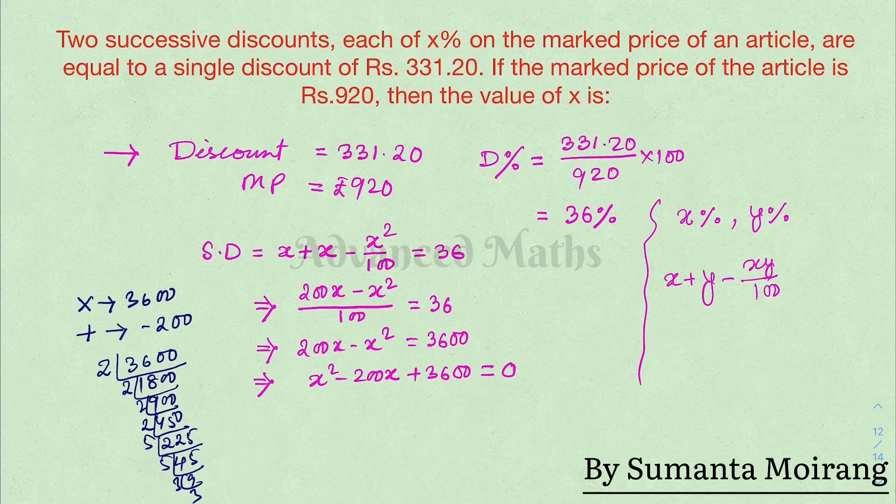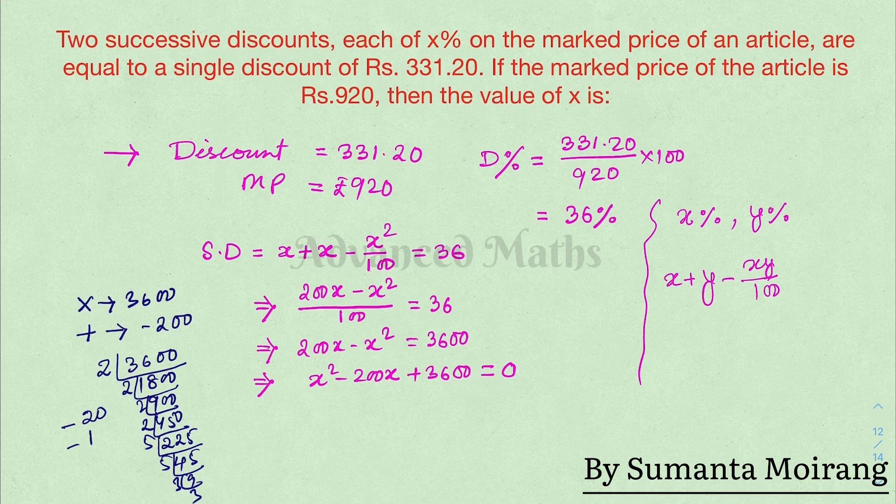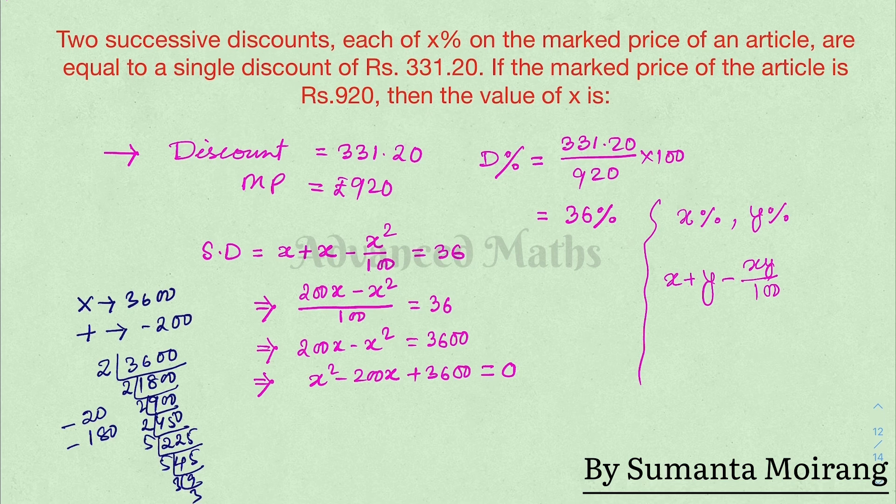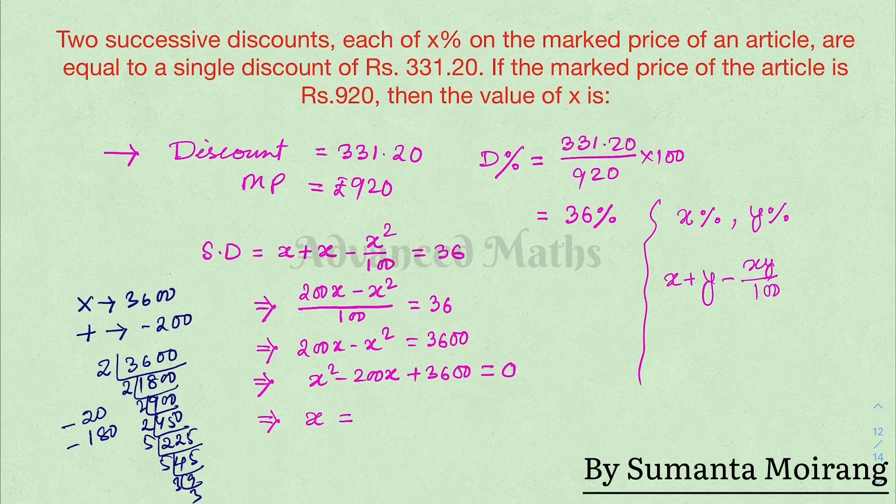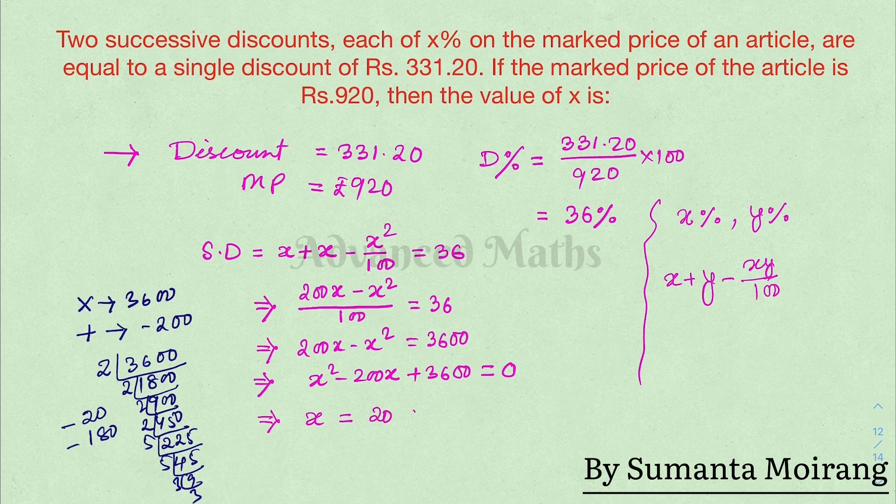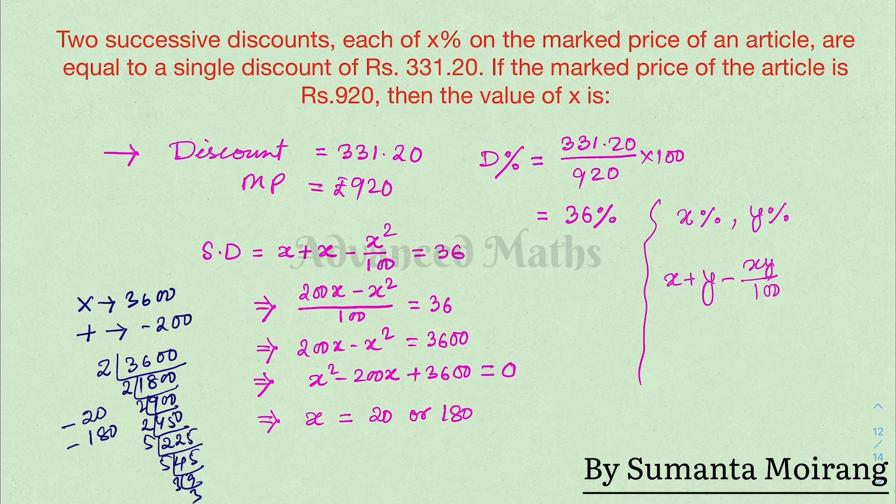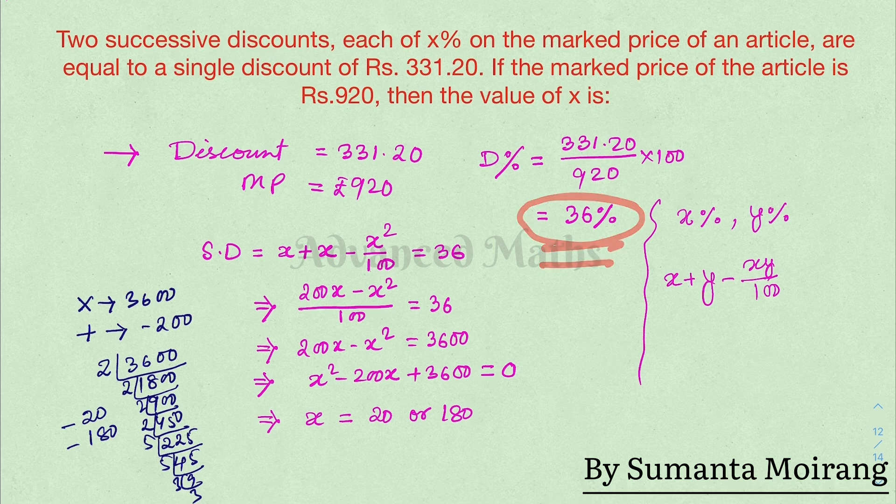The two factors are minus 20 and minus 180. Since the answer must be positive and the opposite signs are used, x equals 20. Therefore, the single discount is 20 percent.